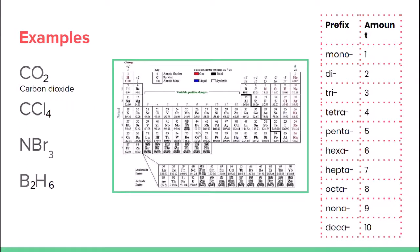For carbon and chlorine: there's one carbon, so no mono prefix — just carbon. There are four chlorines, so the prefix is 'tetra,' giving tetrachloride. Remember to change the ending to -ide. So it's carbon tetrachloride.